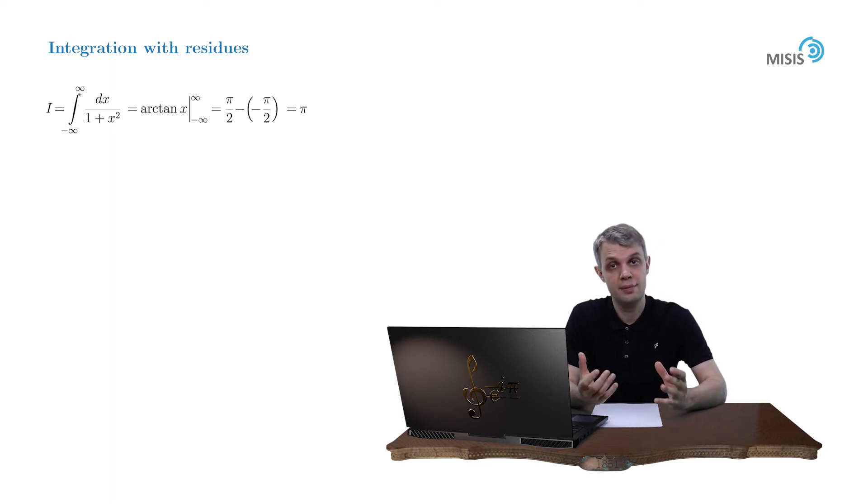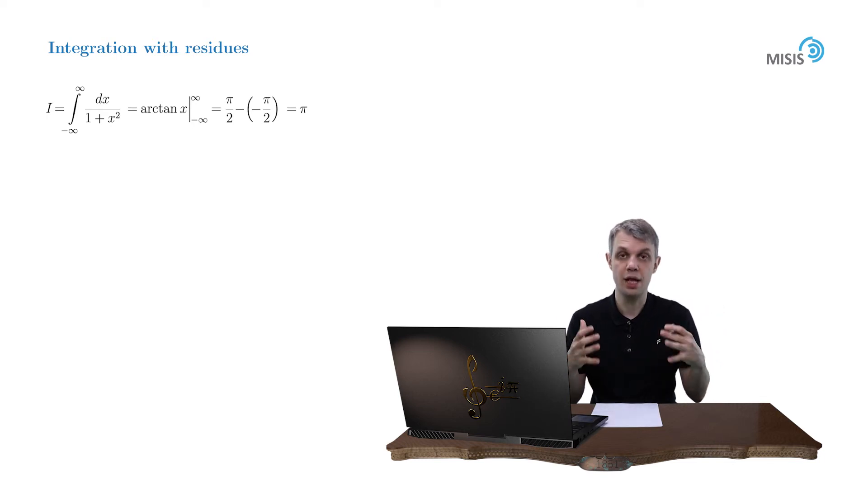And the idea here is that when we close the contour, the integral along these additional elements are easily computed or even vanish. We deal here with an open contour with endpoints at plus and minus infinity, and we need to close it somehow. One of the most obvious choices would be infinite semicircles, positioned either in the upper or lower semiplanes. So let's opt for an upper semicircle.